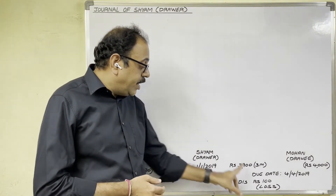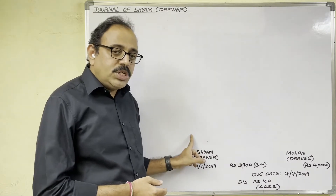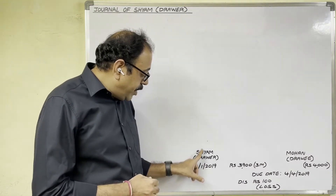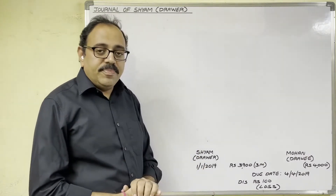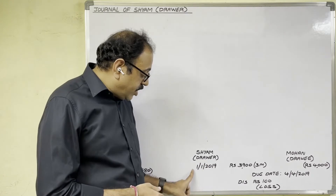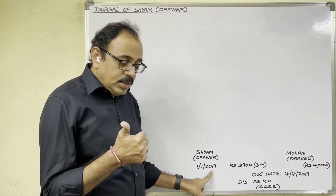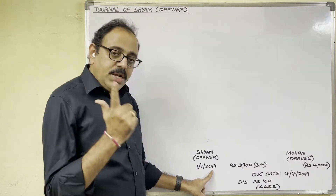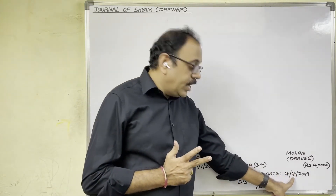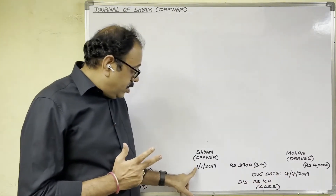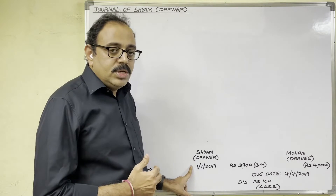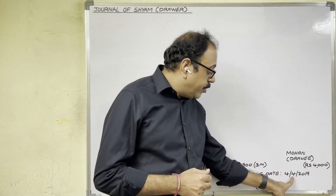Sham is allowing a discount of 100 rupees, and to Sham this discount is a loss. What is the due date of this bill? Sham prepared this bill on 1st January 2019, with a term of 3 months. From 1st January to 1st February is 1 month, 1st March is 2 months, 1st April is 3 months. Don't count the 1st date — count from the next date: 2nd, 3rd, 4th. So the due date of this bill is 4th April 2019.